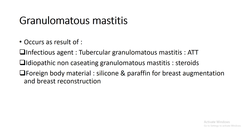Granulomatous mastitis is another type of mastitis with three subtypes: infectious — most commonly tubercular granulomatous mastitis; idiopathic non-caseating granulomatous mastitis, usually due to sarcoidosis, which is rare; and foreign body — from silicone or paraffin used for breast augmentation and reconstruction, which can also cause granulomatous mastitis. Treatment depends on the cause: antitubercular therapy for tubercular type, and steroids for idiopathic non-caseating type.